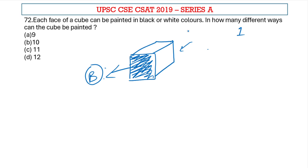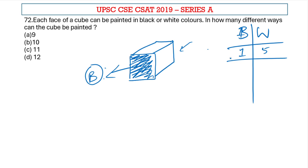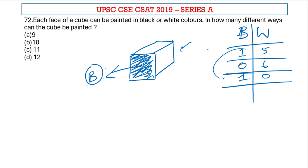Let me write it down so that we can track it — black and white. So one face black, the remaining five faces painted white. The next case: no face is painted black and all faces are painted white. And the next one: no faces painted white and all remaining are painted black. We can also consider one face painted white and all the other faces painted black.